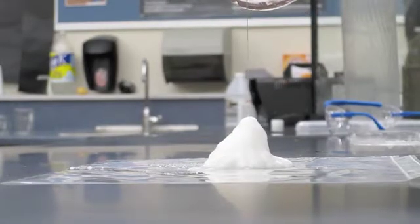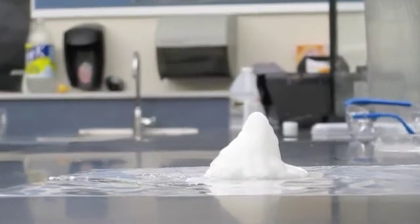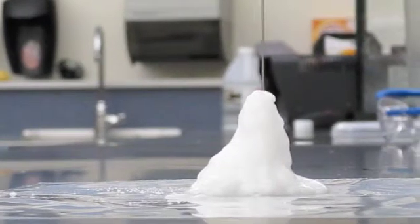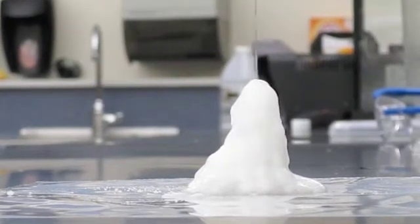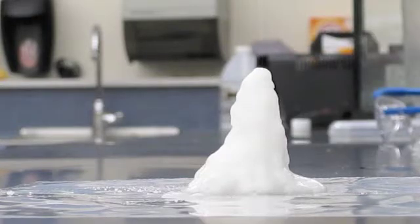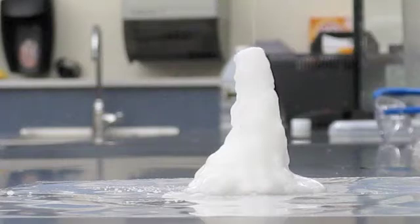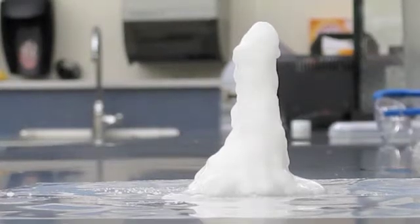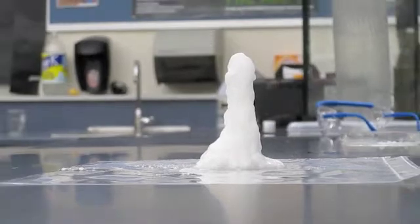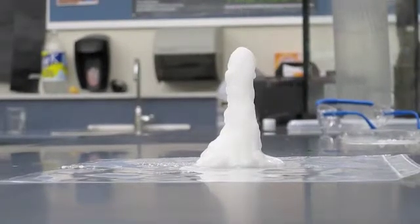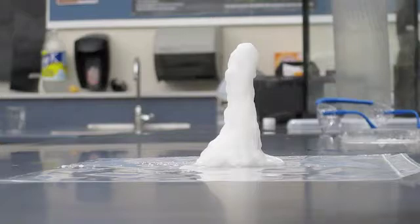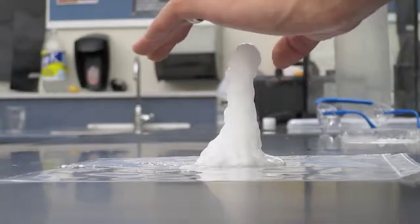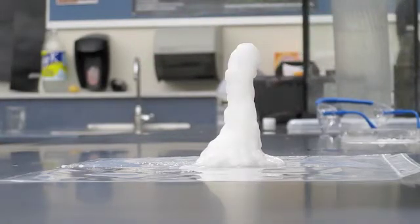So you can start to see I'm kind of building up a column. Pretty awesome stuff. This might be one of the best batches we've had. So we can start to build up this super cool. Now what's interesting about this is it looks cold, doesn't it? We call it hot ice, because this is an exothermic reaction. And what's happening is it's actually releasing heat. If I hold my hand over this, it feels warm, not cold. Pretty cool.